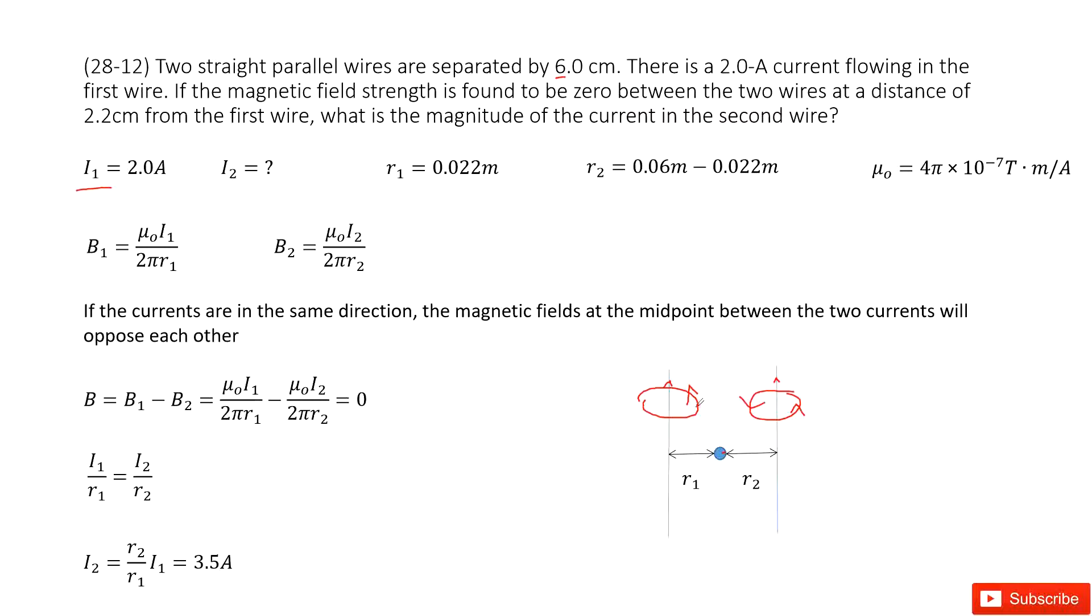we can see the magnetic field at one point. In the middle, they are at opposite directions. At one point, we can consider these two fields just cancel each other. So at this point is where the magnetic field is 0.